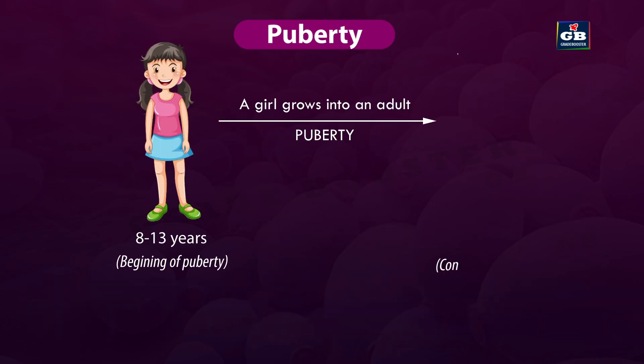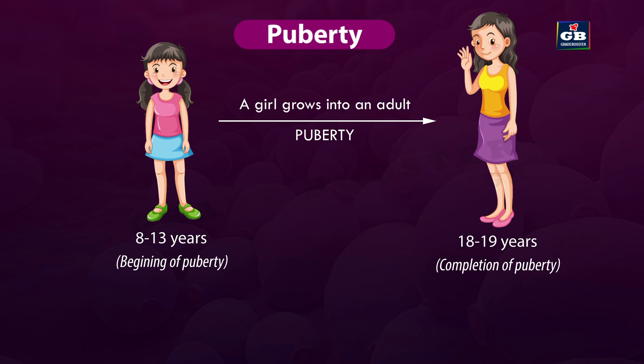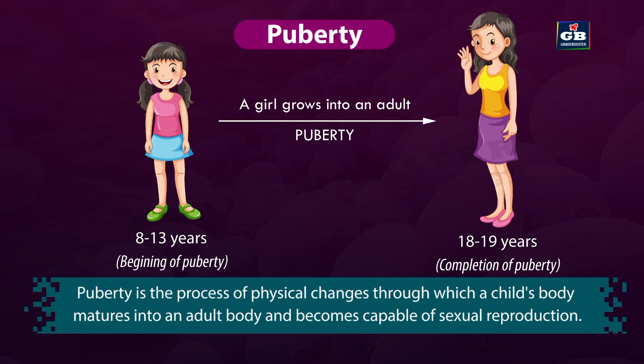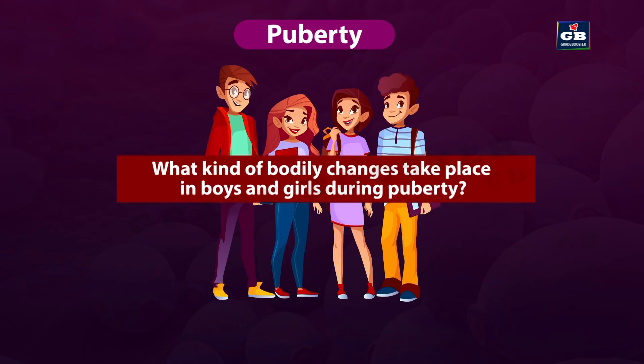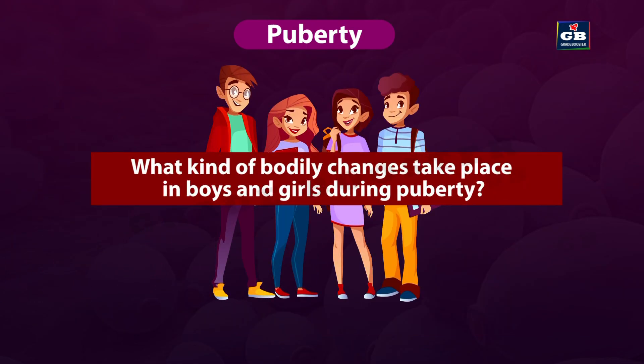During this process of puberty, a child grows into a complete adult. Puberty ends by 18 to 19 years of age. Puberty is the process of physical changes through which a child's body matures into an adult's body and becomes capable of sexual reproduction. Now let us see what kind of changes take place in the bodies of boys and girls during puberty.